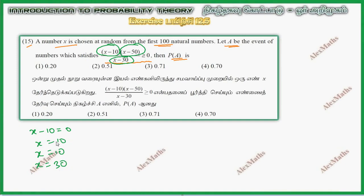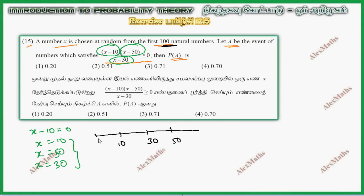Now 10, 50, and 30 are the critical values. We draw a number line with 10, 30, and 50 marked. This covers the first 100 natural numbers, so the range is 1 to 100.